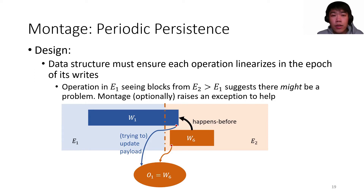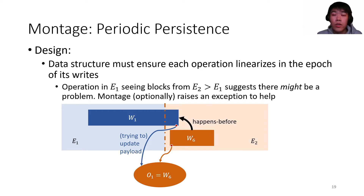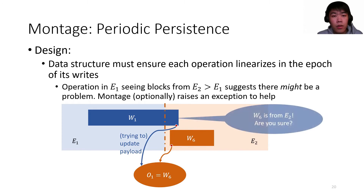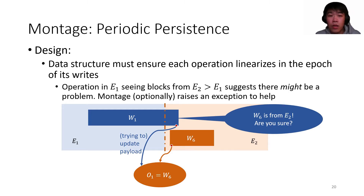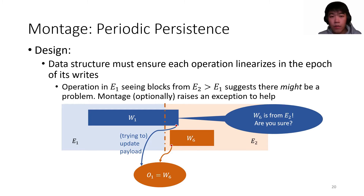During this process, the data structure needs to make sure that the linearization order of operations is consistent with their epoch number. Specifically, if an operation sees some block from a later epoch, there might be an ordering issue. For example, as W1 and W6 overlap in time, it might be possible for W1 to linearize after W6, which is inconsistent with their epoch numbers. In such cases, Montage can optionally raise an exception as a reminder. Note that this issue is not necessarily faulty depending on the data structure — helping and clean-up operations among non-blocking data structures may update or reclaim payloads, and out-of-order persistence of those operations may not be an issue since they do not affect the abstract state of the data structures.